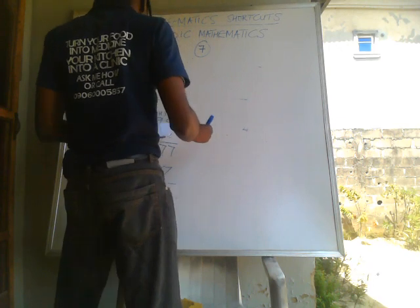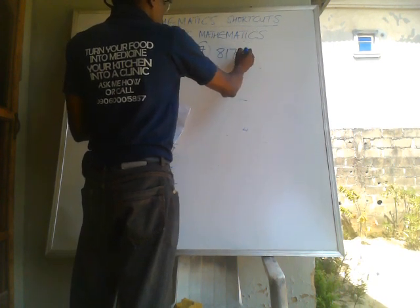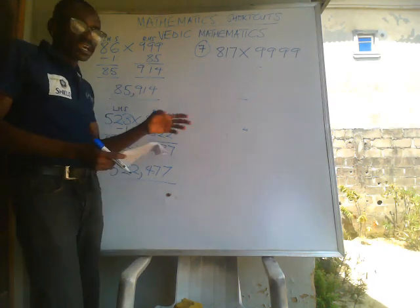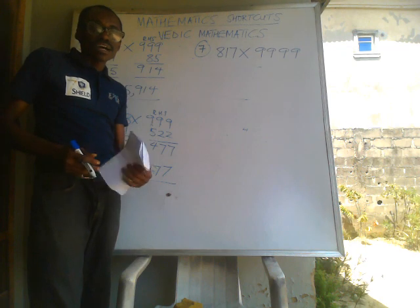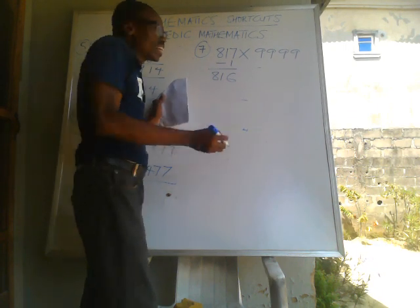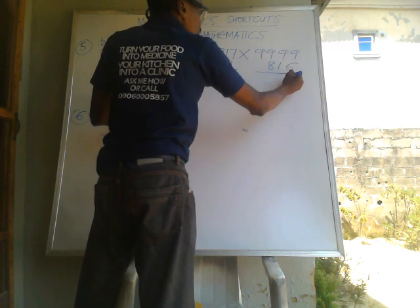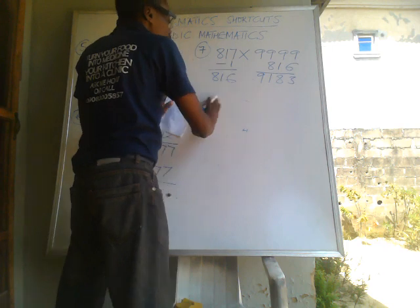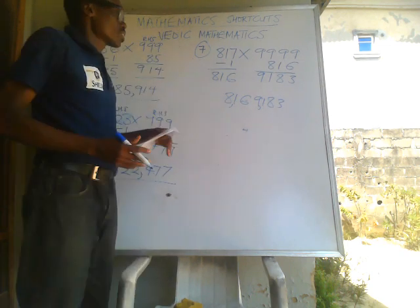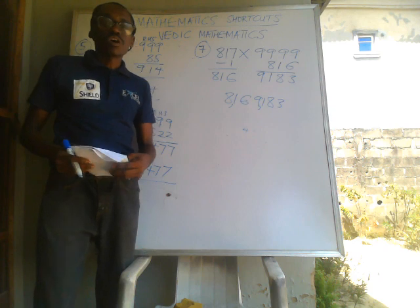Example 7: 817 times 9999. So 817 minus 1 gives us 816. Then 9999 minus 816: 9 minus 6 is 3, 9 minus 1 is 8, 9 minus 8 is 1, and 9 minus nothing is 9. Combining both parts together we get 8169183. You can punch this into your calculator to confirm — this method will always work.